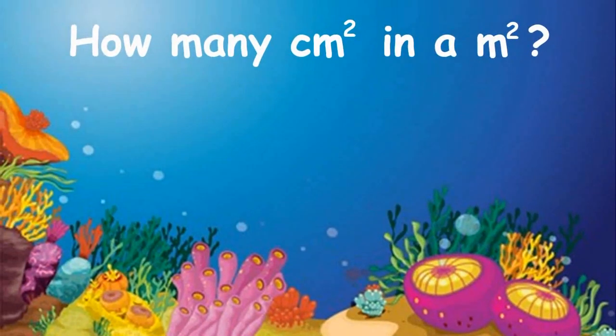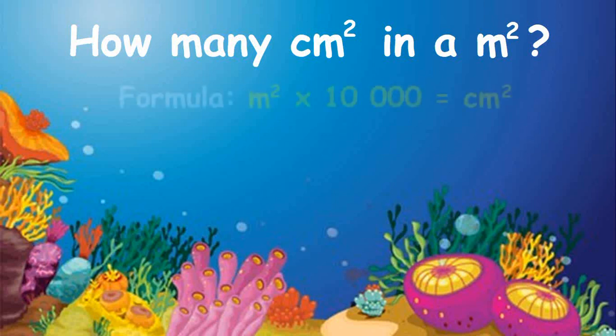How many square centimeters are in a square meter? One square meter is equal to ten thousand square centimeters. To convert square meters to square centimeters, multiply the square meter value by ten thousand. The formula is: square meters times ten thousand equals square centimeters.